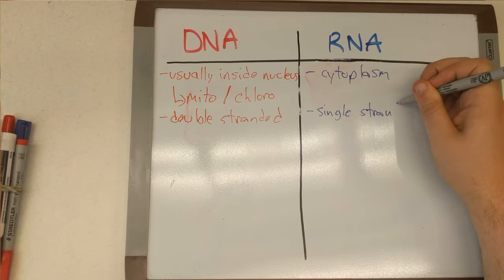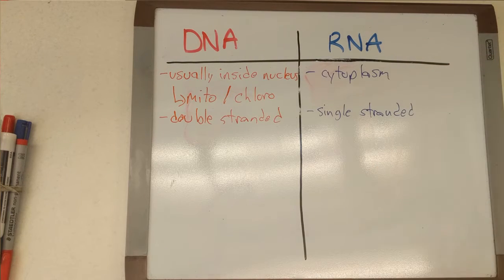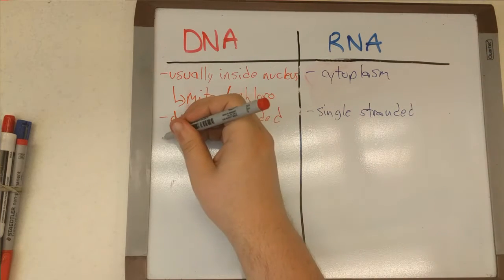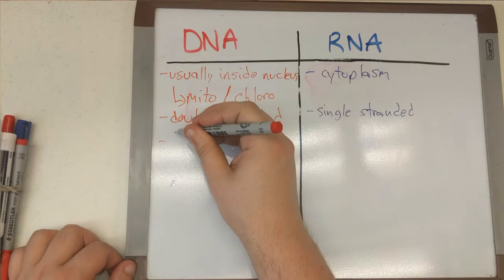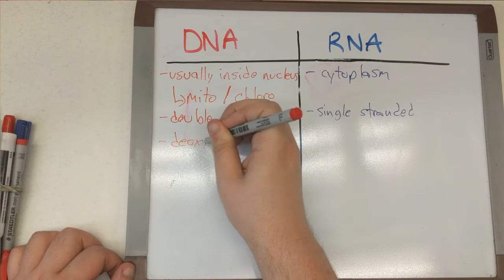RNA, on the other hand, is single stranded, but it also still has the phosphate group and the five carbon sugar, in this case it's the ribose, and four nitrogen containing bases.